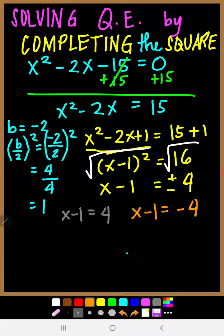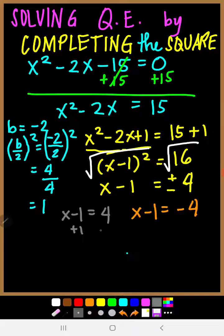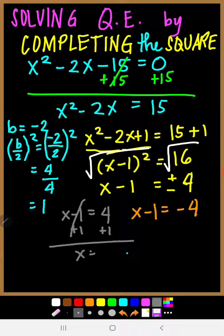We just have to isolate x. For the first equation, we have to remove negative 1. To remove that, we add 1 to both sides. So this becomes 0, and x equals 4 plus 1, which is 5.